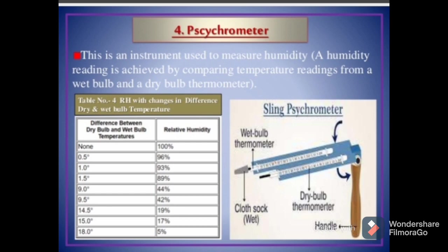With zero difference between dry bulb and wet bulb temperatures, the relative humidity is 100%. With 0.5 degrees difference, the relative humidity is 96%. At 1 degree, we have 93%. At 1.5 degrees, we have 89%. At 9 degrees, we have 44%. At 9.5 degrees, 42%. At 14.5 degrees, 19%. At 15 degrees, 17%. And at 18 degrees, we have 5% relative humidity.